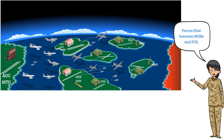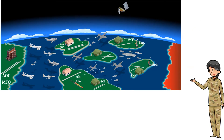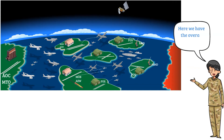It's important to note that ACE is a joint effort and is inherently part of joint all-domain operations. All the services have supporting and supported roles in ACE. All the way on the right is the adversary's territory, which is where the bulk of the threats are located. That is the overall picture of a battle space.